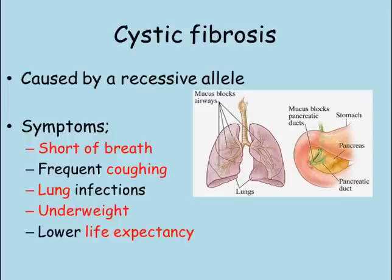Thick, sticky mucus is not only produced in the trachea; it is also produced in the pancreas, which then blocks the tube carrying digestive enzymes to the small intestine. This means that food is not broken down properly, so people with cystic fibrosis can be underweight. These symptoms combined mean people who suffer from cystic fibrosis have a lower life expectancy than people without the disease.